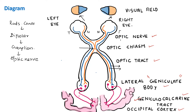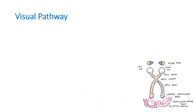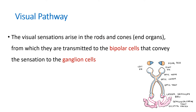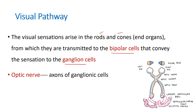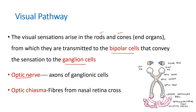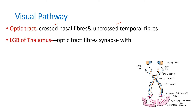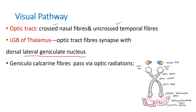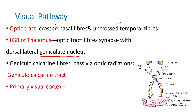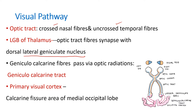Now let's see what to write when a short note or answer briefly question on the visual pathway is asked. Visual sensations arise in the rods and cones, transmitted to the bipolar cells, then to the ganglion cells whose axons form the optic nerve. At the optic chiasma, nasal retinal fibers cross. The optic tract contains crossed nasal fibers and uncrossed temporal fibers. They synapse at the lateral geniculate body of the thalamus, then travel via the geniculocalcarine tract through the optic radiations to the primary visual cortex — the calcarine fissure area of the medial occipital lobe.